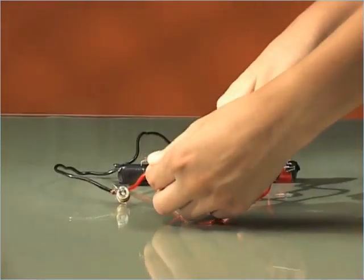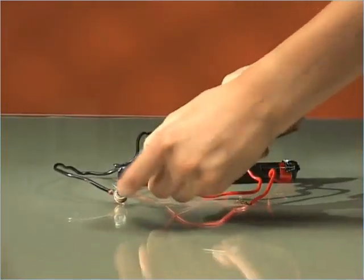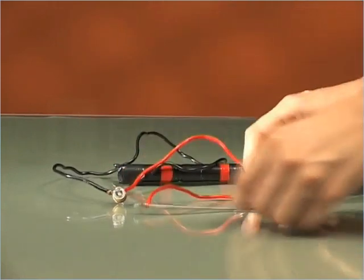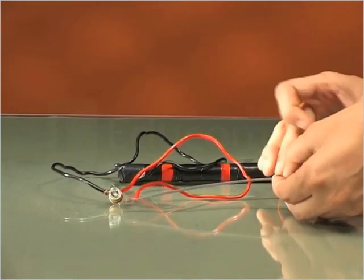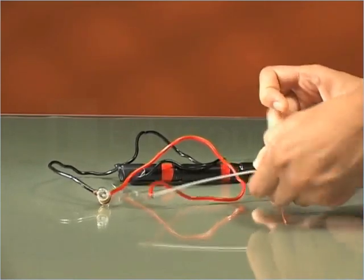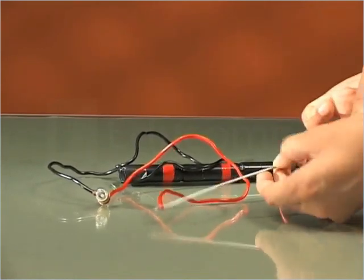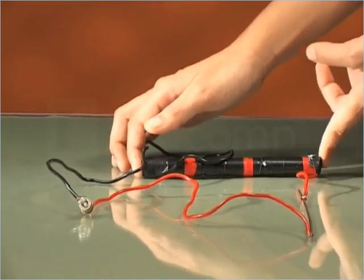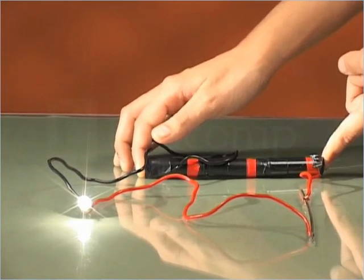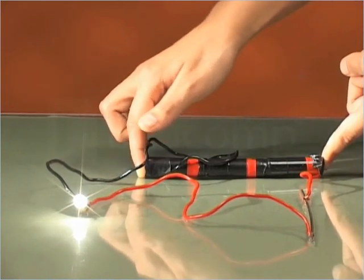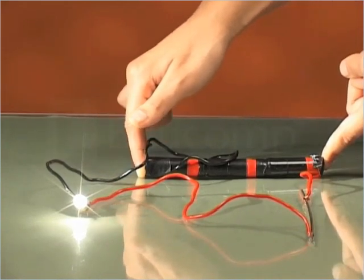Connect the iron rod between the open ends of the wires. What do you see? You can see that the bulb glows. It means that the iron rod is a good conductor of electricity.